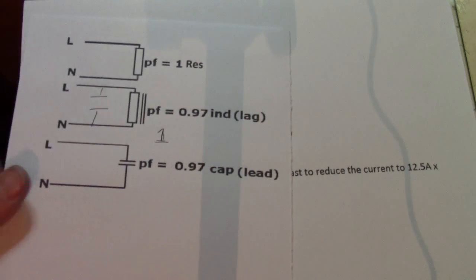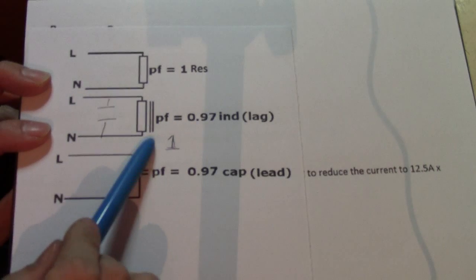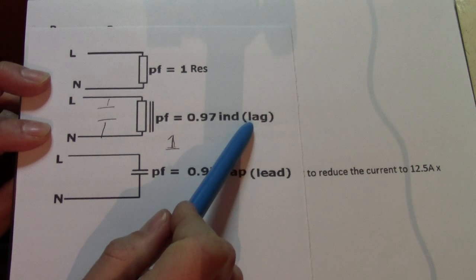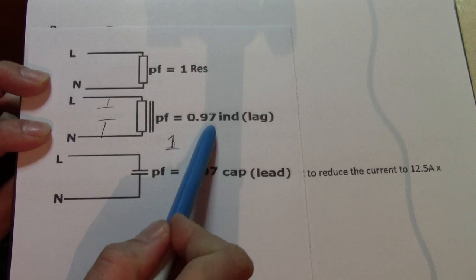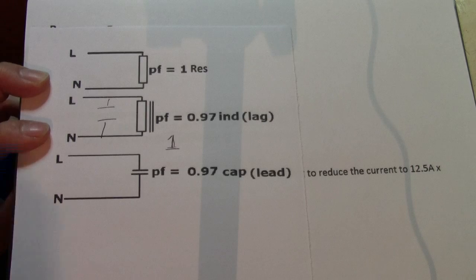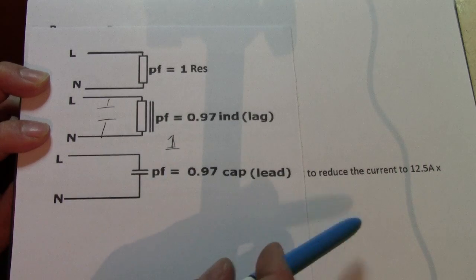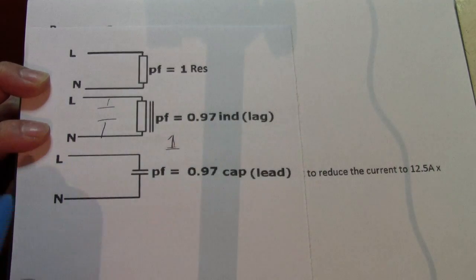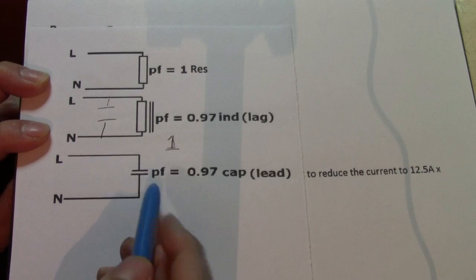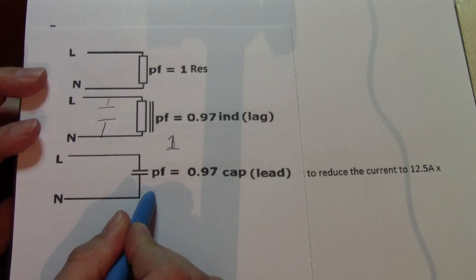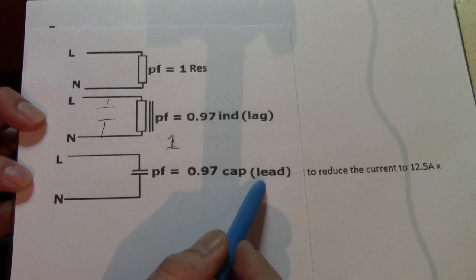Right. Now then, the way to get that is, right here, we have our inductive load. And that is called lag in Power Factor. So, we're going to go for a Power Factor of 0.97. I suppose we should have just gone for 0.9 to make it easier to go with what we're doing here. But that's called lag. Resistive load, remember, Power Factor is unity, so 1. So, we've got a capacitive load, which is Power Factor of 0.97, which is lead.